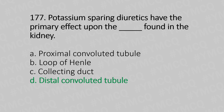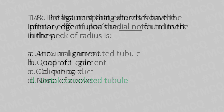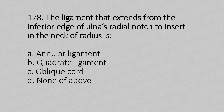Question 178: The ligament that extends from the inferior edge of the ulnar's radial notch to insert in the neck of the radius is — Option A: Annular ligament, Option B: Quadrate ligament, Option C: Oblique cord, Option D: None of the above. And the answer is Option B, quadrate ligament.